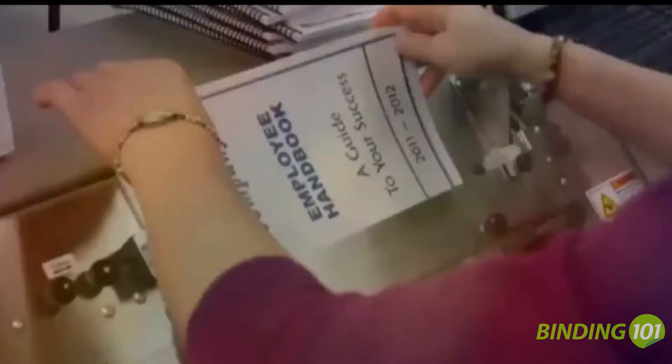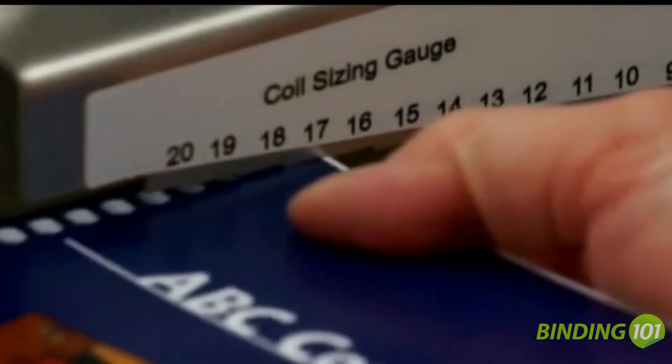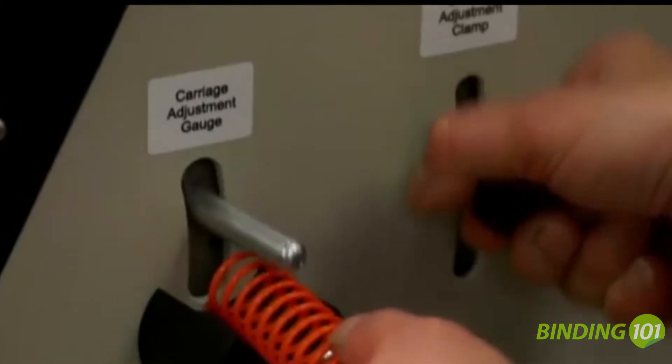No tools are required for basic setup. Changeover between jobs takes only minutes with unique coil size carriage adjustment gauge and book clamp adjustment gauge.